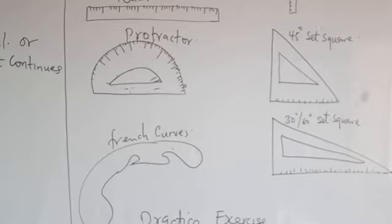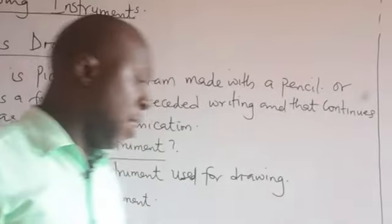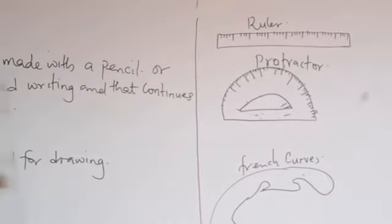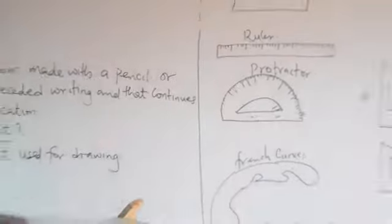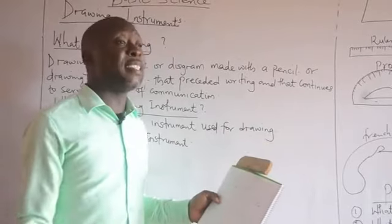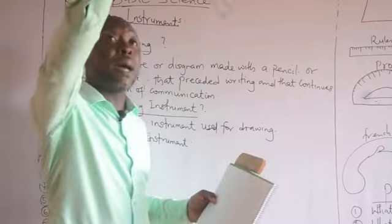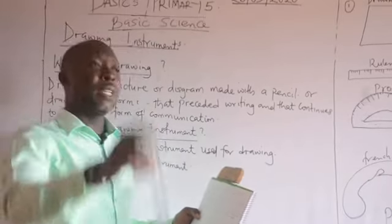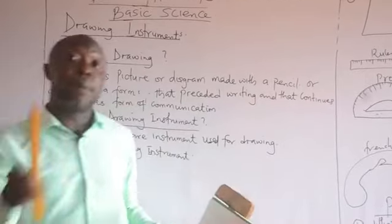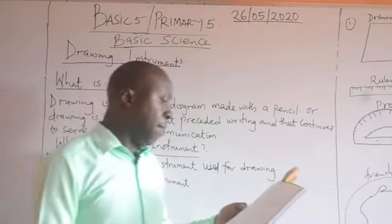Then we have the ruler. We use a ruler to measure lines and also to draw lines. A ruler could be made of wood, metal, or plastic. We have a wooden ruler and we also have a metal ruler.